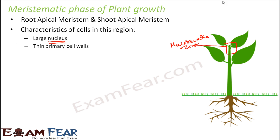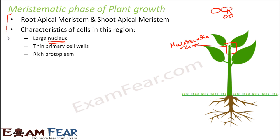These meristematic cells also have thin primary cell walls. Why thin? Because they are easy to break — if the cell wants to divide to form multiple cells, a thin cell wall is easier to break. If it is very thick, it will not break easily. So if the cells are rapidly dividing, their walls should be thin. Additionally, these cells have rich, thick protoplasm so that when the cell divides, the protoplasm gets distributed into the two daughter cells. These are the main characteristics of the meristematic phase.